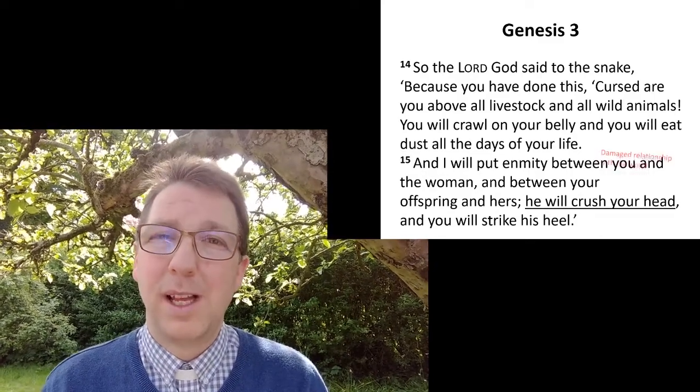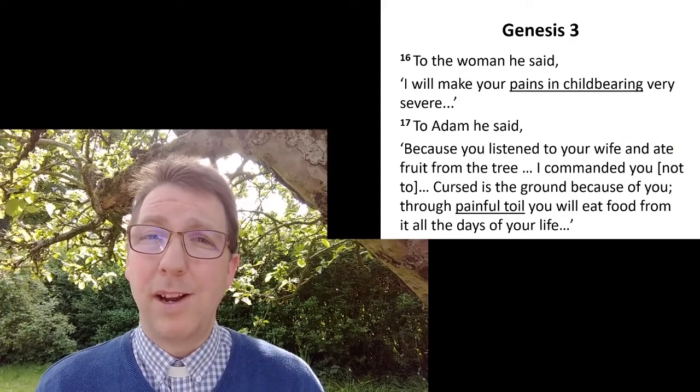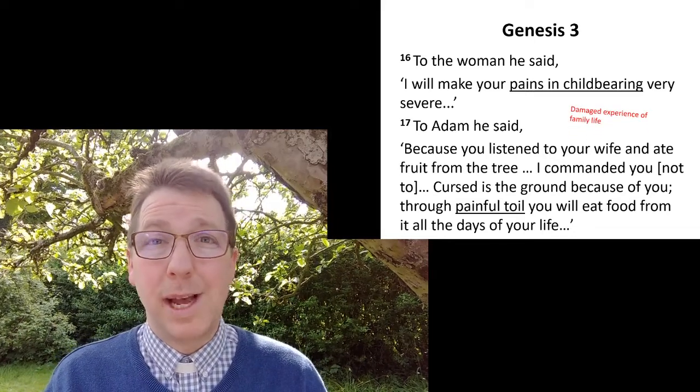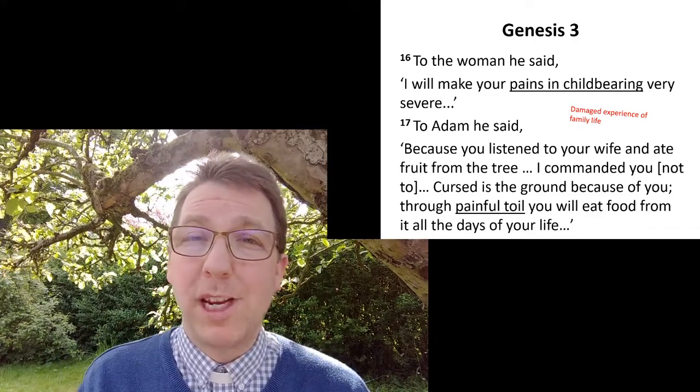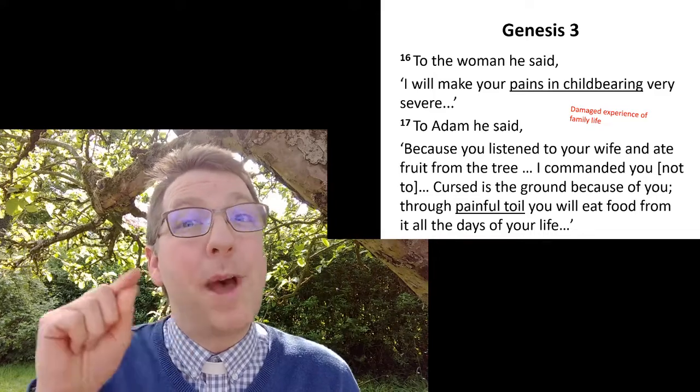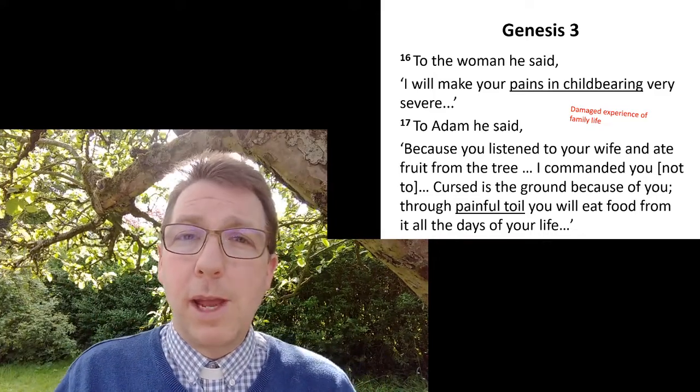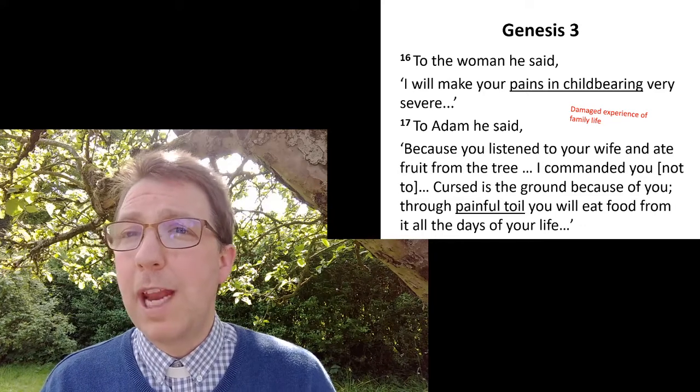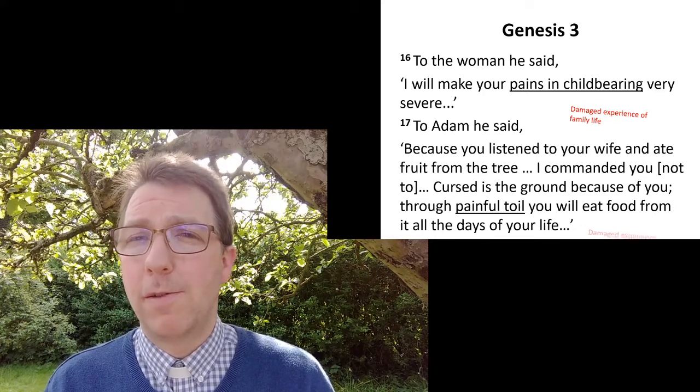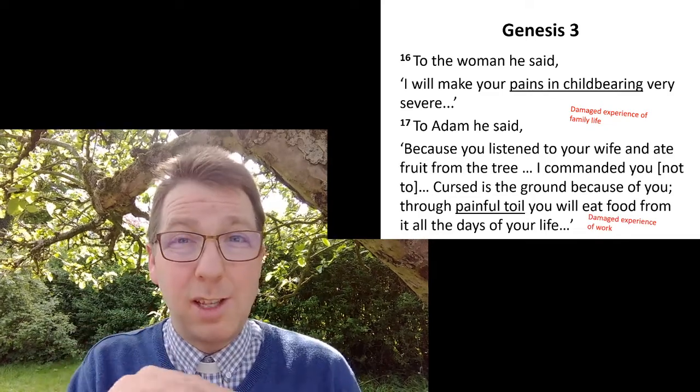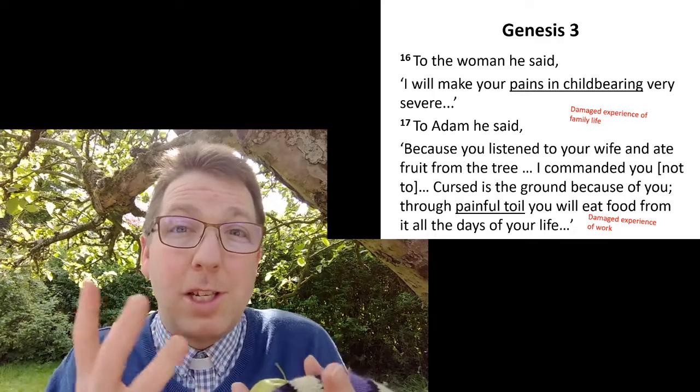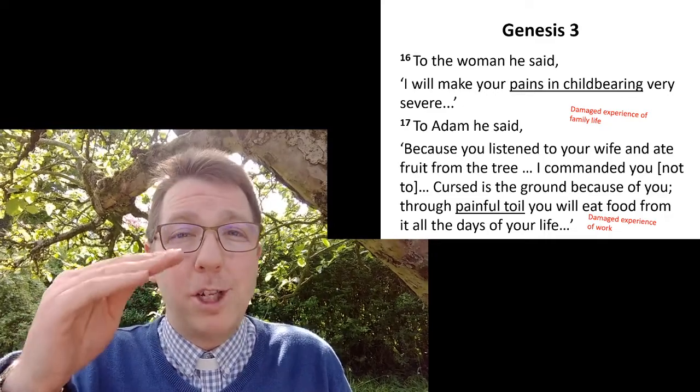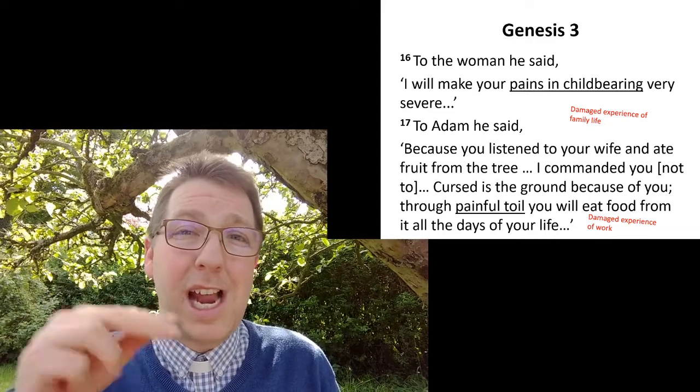To the woman, God said, I will make your pains in childbirth-bearing very severe. See, there's a damaged experience of family life there. To Adam, the man, he said, because you listened to your wife and ate fruit from the tree—not because he listened to her, because it's really good to listen to one another, but because he obeyed her rather than obeying God—because, said God, you ate fruit from the tree I commanded you not to, cursed is the ground because of you. Through painful toil you'll eat food from it all the days of your life. Notice that the ground was cursed, the world was damaged because of what we did. And also, our experience of life of working in the world was damaged as well. Beforehand, it was great fun looking after the world, it all went really well, but our relationship with God had been damaged, with each other had been damaged, and our relationship with the world as well.